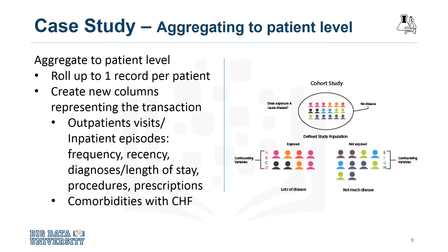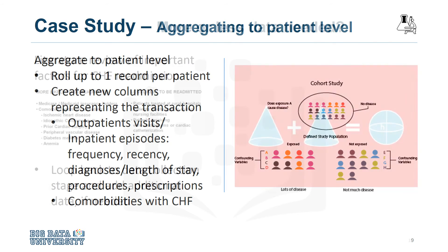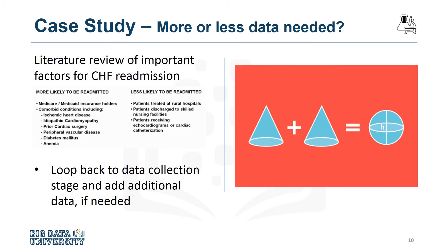Comorbidities with congestive heart failure were also considered, such as diabetes, hypertension, and many other diseases and chronic conditions that could impact the risk of readmission. During discussions around data preparation, a literary review on congestive heart failure was also undertaken to see whether any important data elements were overlooked, such as comorbidities that had not yet been accounted for. The literary review involved looping back to the data collection stage to add a few more indicators for conditions and procedures.